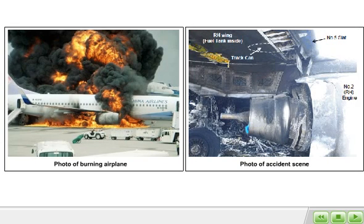The first picture shows the aircraft during the fire. The second picture shows the number five slat-track housing following the fire.